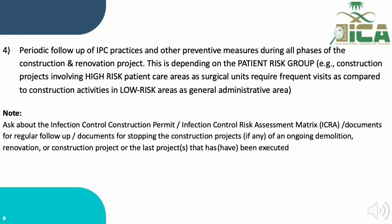Based on the risk assessment, each construction type will identify measures required pre-construction, during construction, and post-construction. The IPC team must monitor if these measures are in place, and if not, they have the authority to stop the project. Required documents include the infection control construction permit, ICRA matrix, regular follow-up records, and documents for stopping the project if applicable, for ongoing or recent projects.